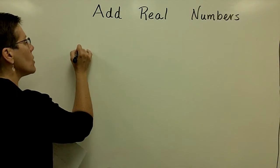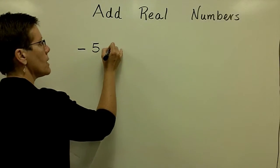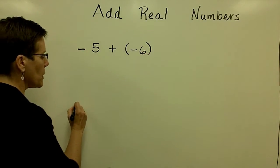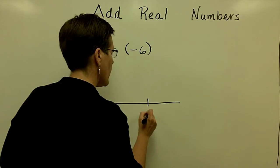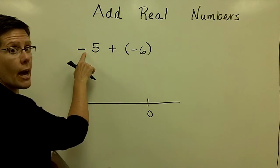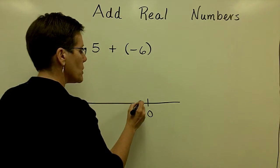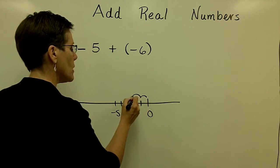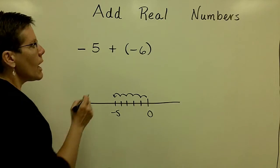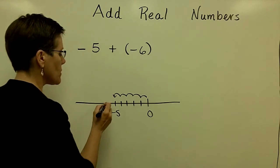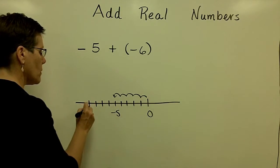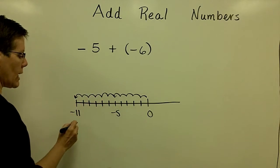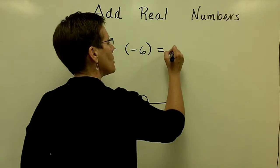Here's an example problem. If I wanted to take a negative 5 and add to that a negative 6, many people will illustrate this initially on a number line starting at 0. I would like to go to the left on the number line by 5 units because I want to go negative. So I'm going to move to the left those 5 units. I want to add to that a negative 6, so I've got to go to the left some more — 6 more units — and I will land at a negative 11.